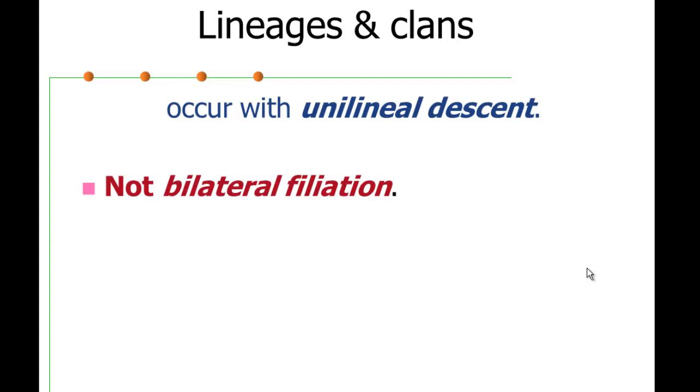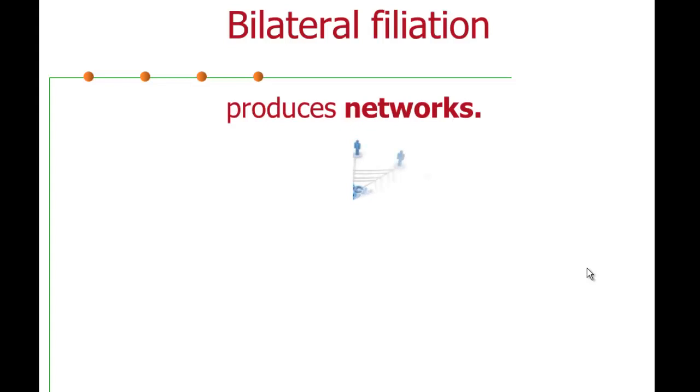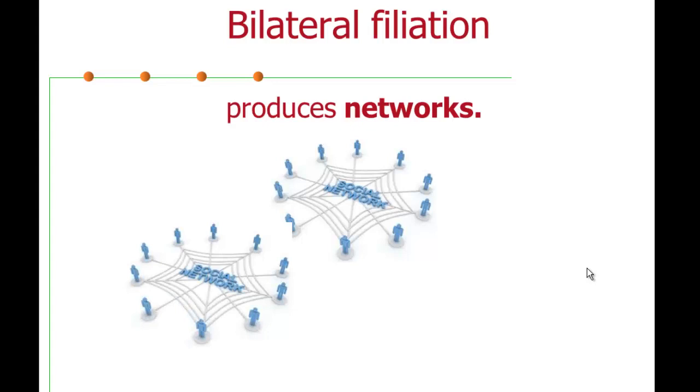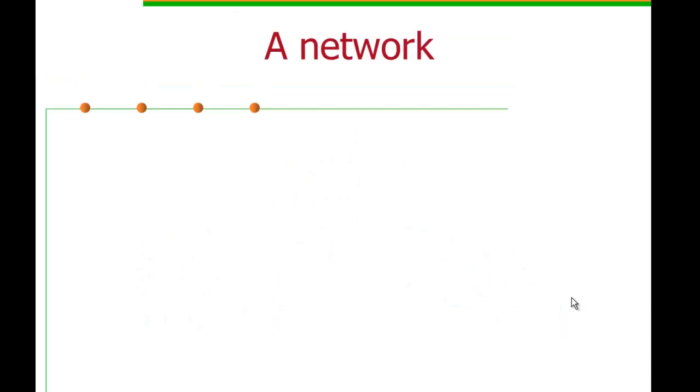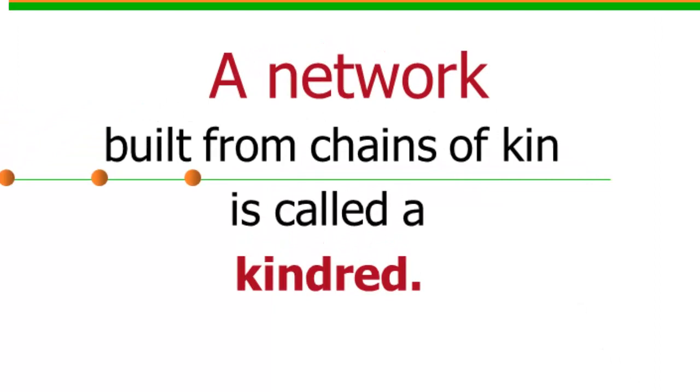So bilateral affiliation produces networks. And we all now have this clear sense of what a social network is, but it's chains of individuals who are linked together. And your own network depends upon your being there. Now when a network is made up just of kin, it's built from chains of your kin. We call it a kindred. And one way to think of this is if everybody on your Facebook page is one of your relatives, then that's really your kindred that's on that page. Chances are for most of you that's not true, and that's a very interesting thing to look into.